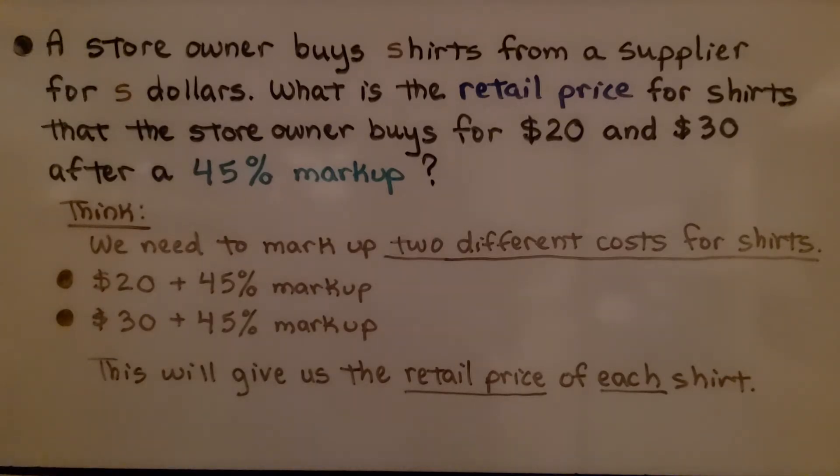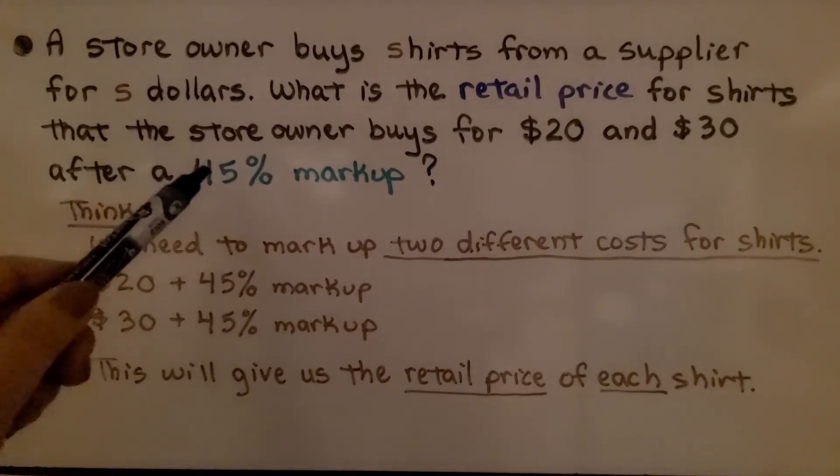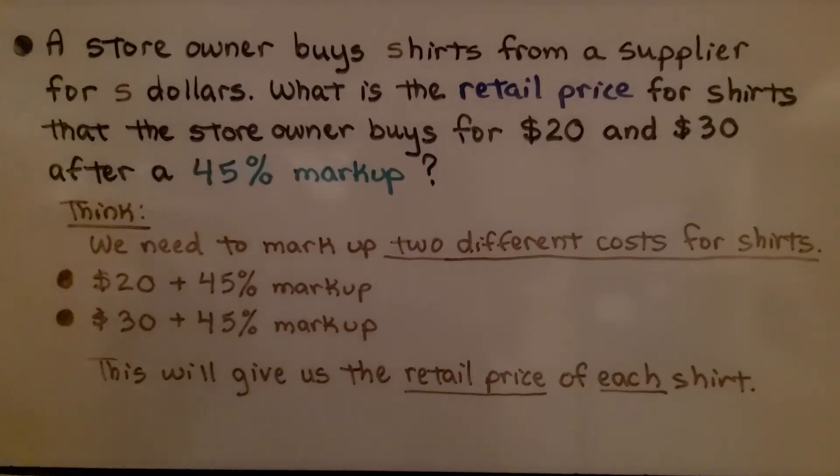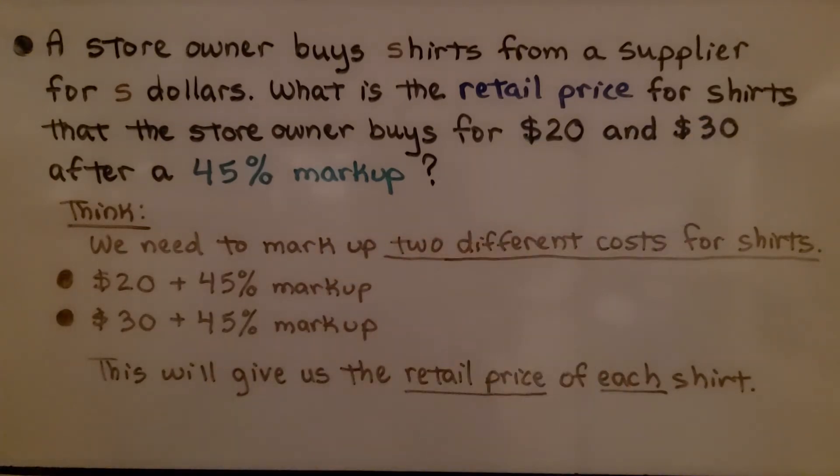What is the retail price for shirts that the store owner buys for $20 and $30 after a 45% markup? We need to mark up two different costs for shirts, $20 and $30. We're going to do $20 plus a 45% markup and $30 plus a 45% markup. This will give us the retail price of each shirt.